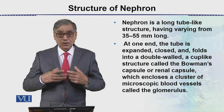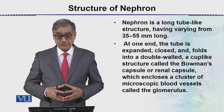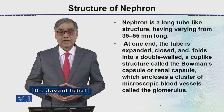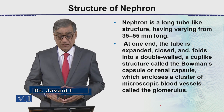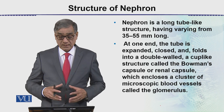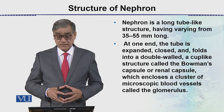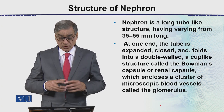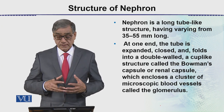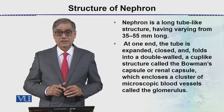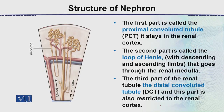The nephron is a long tube-like structure of varying length — about 35 to 50 mm long. At one end, the tube is expanded, closed, and folded into a double-walled structure called the Bowman's capsule, also known as the renal capsule, which encloses the cluster of capillaries called the glomerulus.